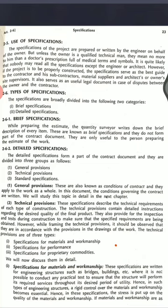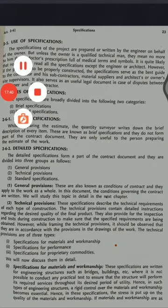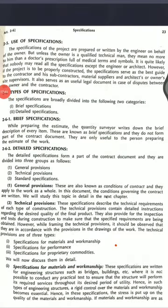First, specification for materials and workmanship: these specifications are written for engineering structures such as bridges, buildings, and all kinds of engineering works. By this provision, rigid control over the materials and workmanship can be maintained. This includes physical properties, chemical properties, electrical and thermal acoustic properties. It provides clear statements about the inspection procedure and testing of materials, and gives description of the construction method for each item along with instructions on finalizing the work.